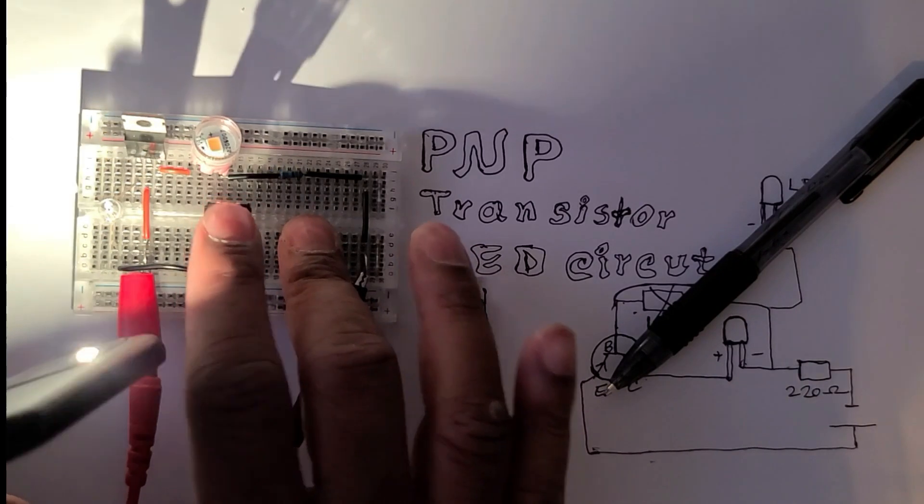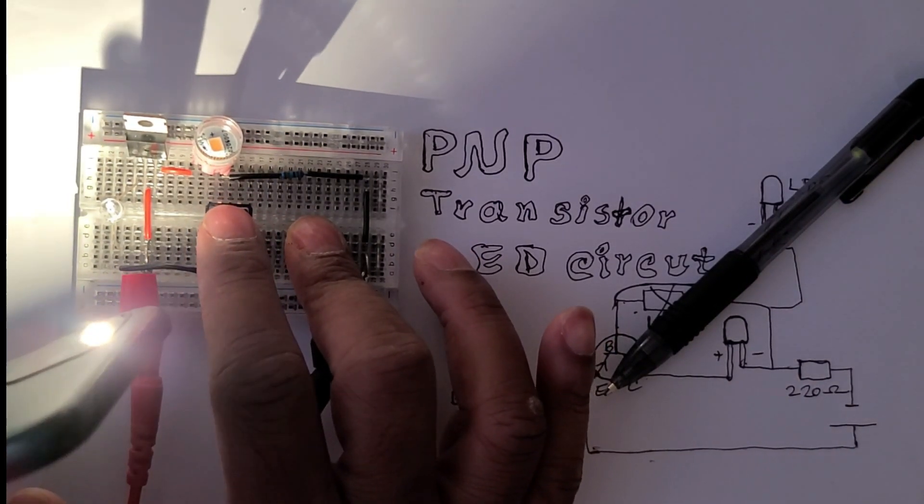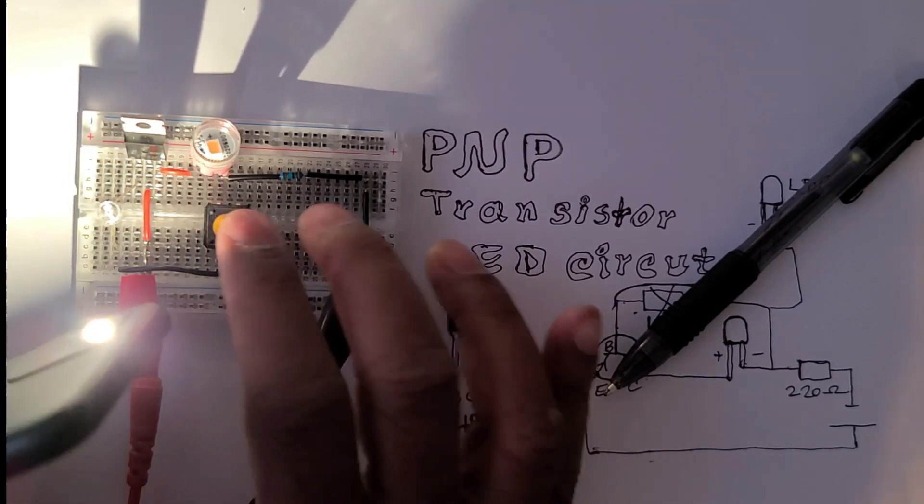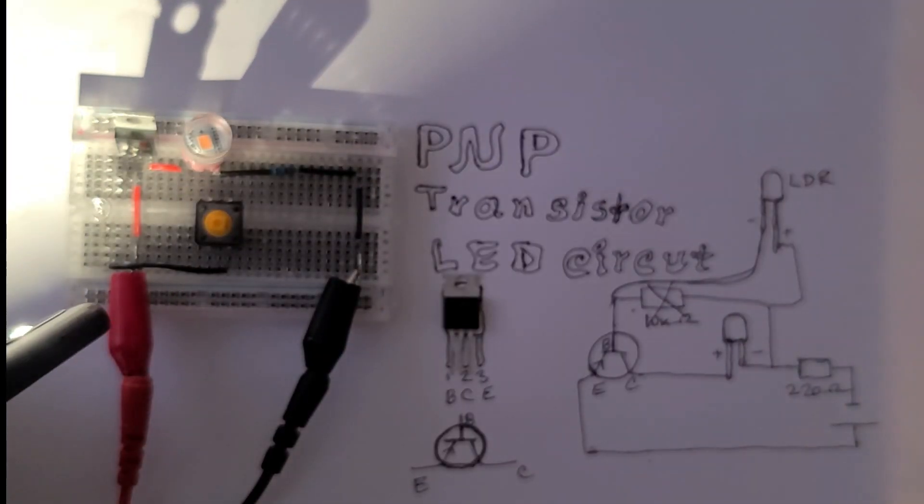This is one of the uses of the PNP transistor, and we can use many other circuits based on this principle. Hope you like this video. If you have further queries, please let me know in the comment box. I will see you next time. Thank you very much.